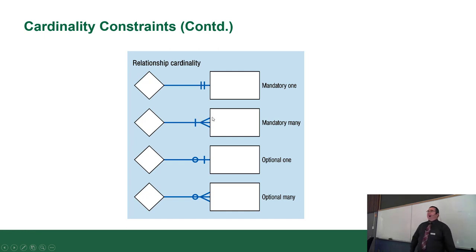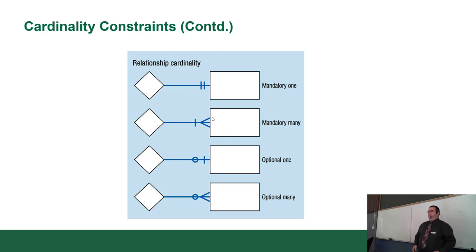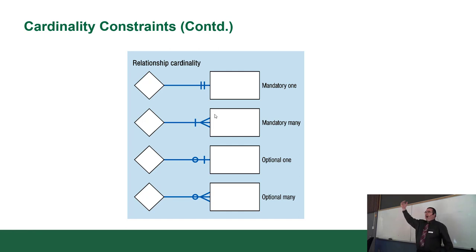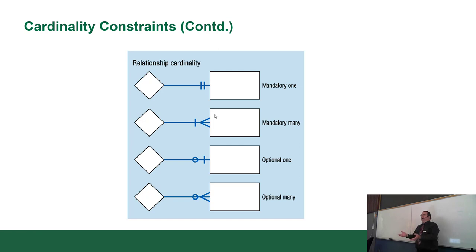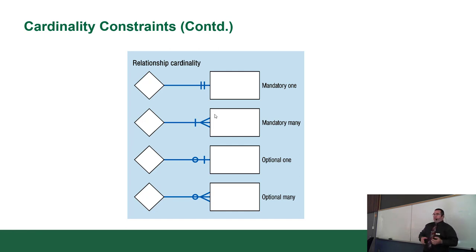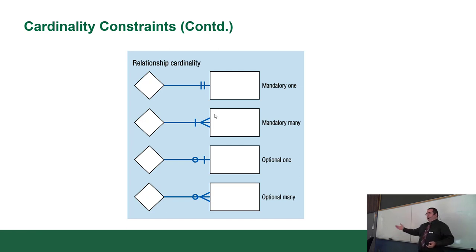The crow's foot symbol — three little toes — means many. There's at least one but there may be more. So one line plus crow's foot means there must be at least one, but there can be multiple. An order must have at least one order line item. You could go to a grocery store and buy one thing or a full cart — so there's at least one item and no upper limit.